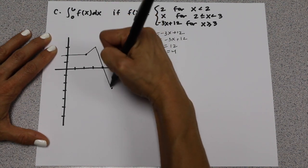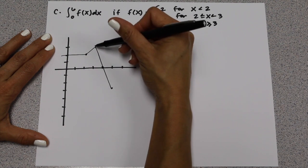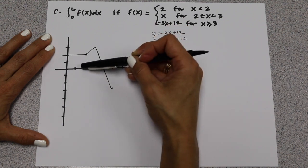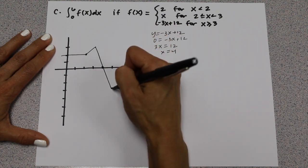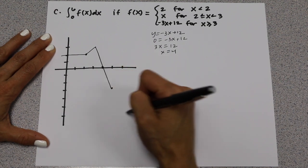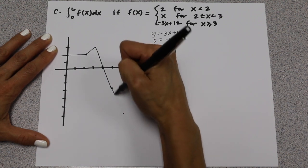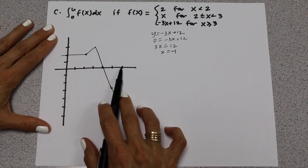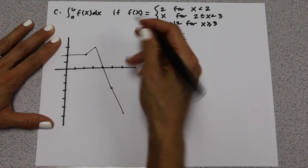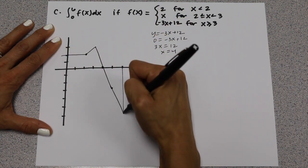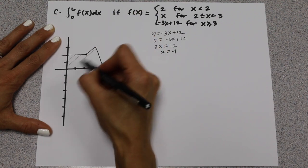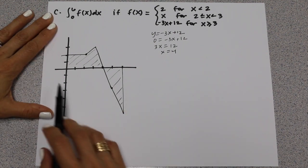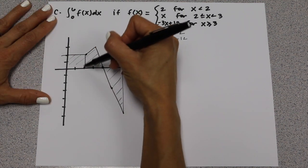That straight line hits the line y equals x right at the point (3, 3), and we go all the way to x equals 6. Now we're looking at this piecewise function from 0 all the way to 6. We want to break this up into familiar shapes. Because this first piece is 2 by 2, this is a square.